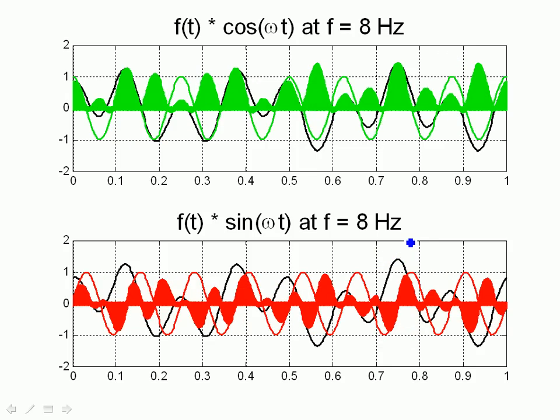However, if we go on and look at 8 hertz, where we know there's a cosine term, we get positive, positive, positive. This is greater than 0 when we do the integral. If I look at the sine term, this is approximately equal to 0. I can see that just by looking at the fact that the positive and negative components value, or basically cancel out.